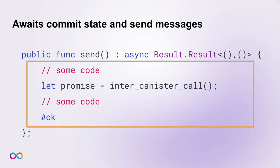If no-await is used, the code after the callback is executed in the same message and the entire canister call is queued. The drawback is that we don't even know if the message failed or what the result was — for example, if the message traps, it could be that it was never sent. In this example, the shared function executes atomically: even though we make an inter-canister call, no commit point is reached as we don't await the response. Instead, the inter-canister call is queued and executed upon exiting the shared function by producing a result.